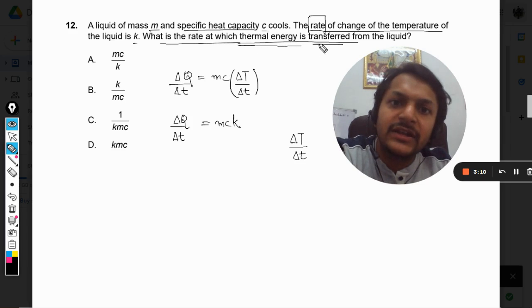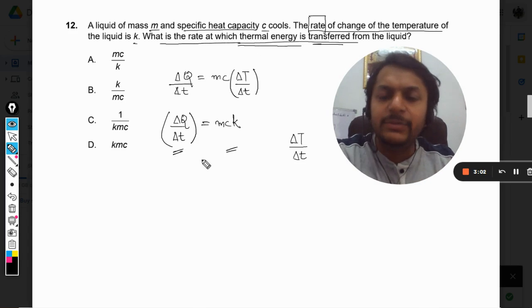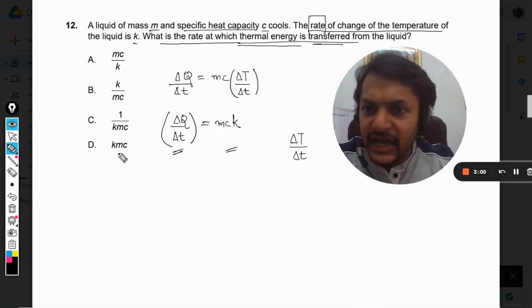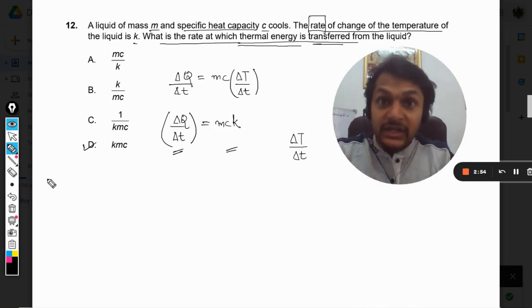What is the rate at which thermal energy is transferred from the liquid? It means this is what we want to find, and this will be equal to the product of mck. So our answer is D. It's a very simple question but deeper in concept.